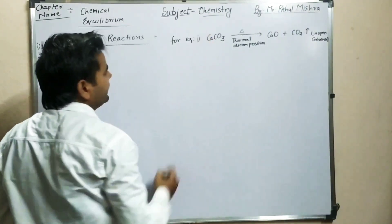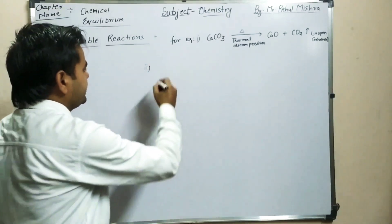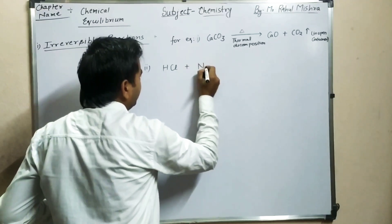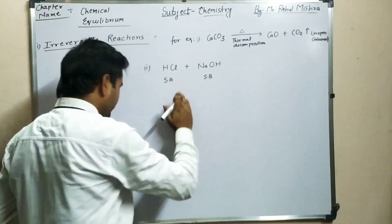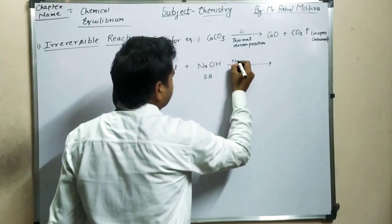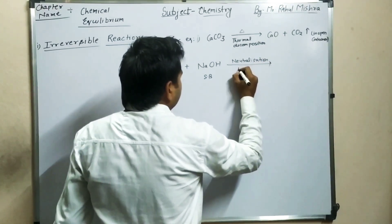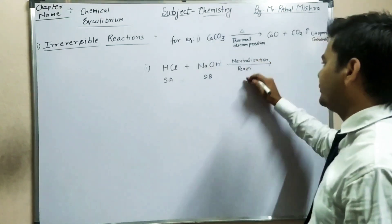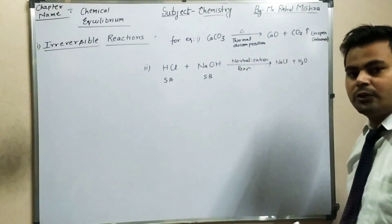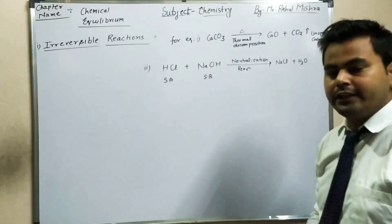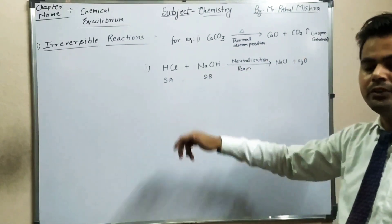The second example is the reaction of a strong acid with a strong base, like HCl reacting with NaOH. HCl is a strong acid and NaOH is a strong base. This reaction is called a neutralization reaction, and salt and water are obtained. This reaction is also irreversible in nature — reactants convert to products, but products do not convert back into reactants.